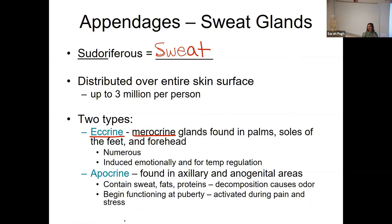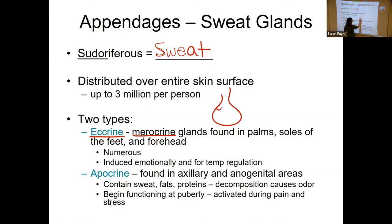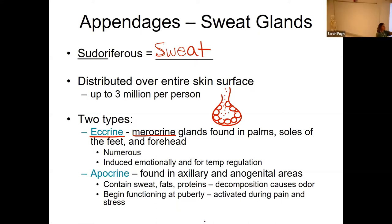These are the type of glands we talked about in chapter four, where you have a multicellular gland with cells in it. Those cells produce sweat stored in vesicles, and those vesicles just sort of burst and release the sweat so it can come out onto the surface of the skin. These are very different from holocrine glands, where the whole cell ruptures.